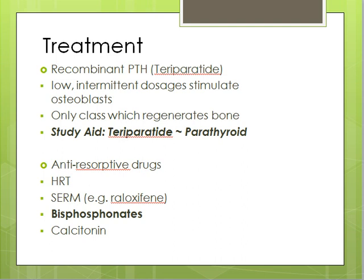Moving on to treatments. As mentioned earlier, there are two main causes of osteoporosis: an increase in osteoclast activity or a decrease in osteoblast activity. So the main question we should be asking ourselves here is: what kind of drugs can we give in order to increase osteoblast and decrease osteoclast activity?